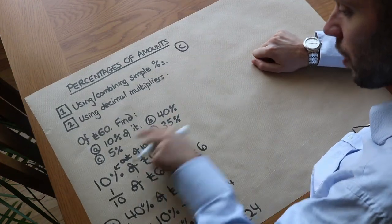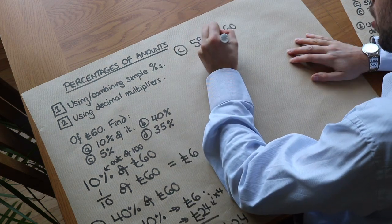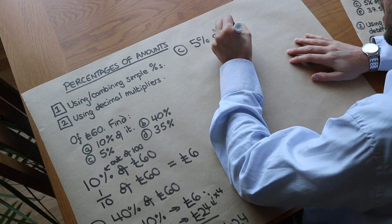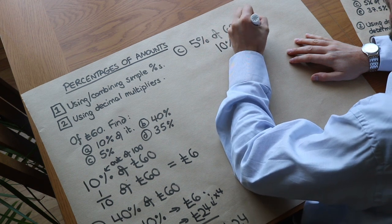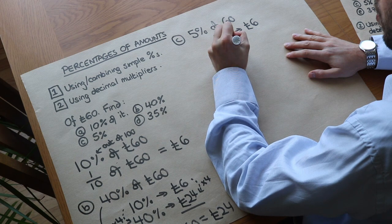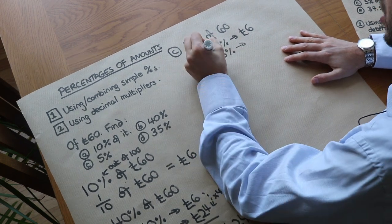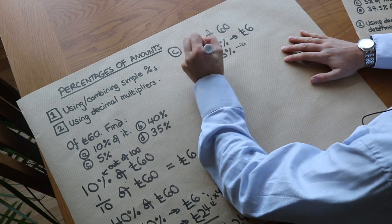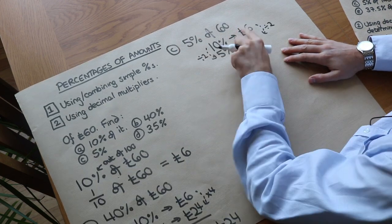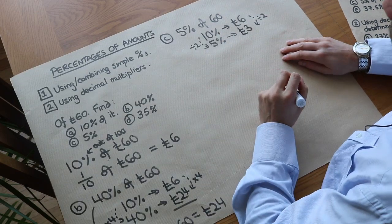What about the next one — we want to find 5% of £60. We usually start with 10%, which we worked out was £6. Five percent is half of 10%, so we're dividing by two, giving us half as much, which is £3. Half of 6 is 3.